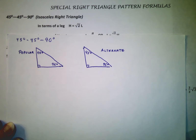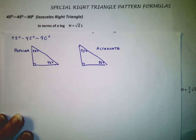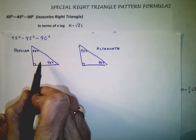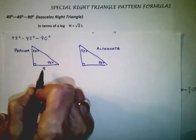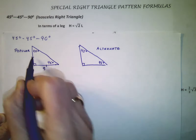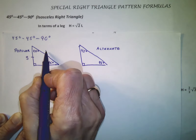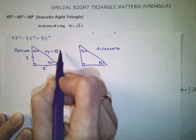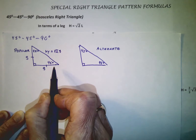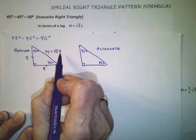We'll start with the 45-45-90 isosceles right triangle. This has two representations in pictures. The most popular labels one side, and because it's isosceles, the other side is the same length. To find the hypotenuse, it's going to be the square root of two times the length of one of the legs. So we have two equal sides and a square root of two side.